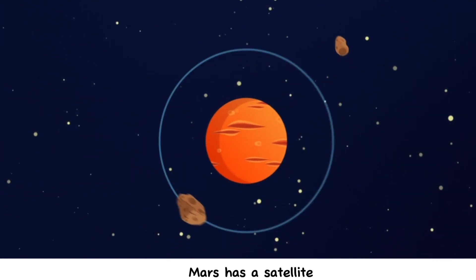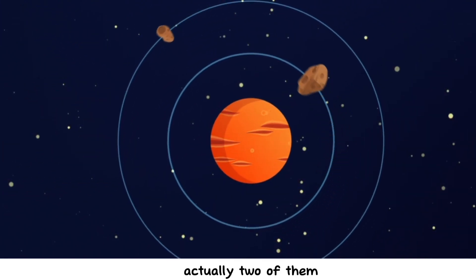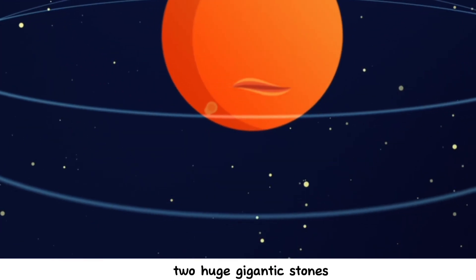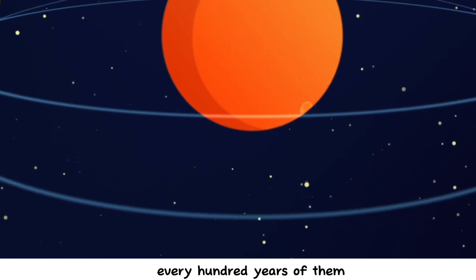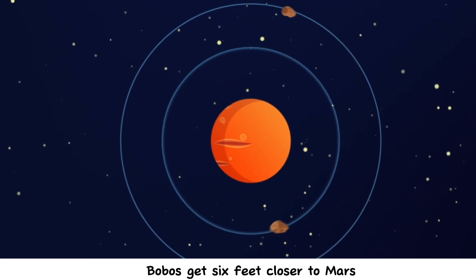Just like the Earth, Mars has a satellite, actually two of them. Two huge gigantic stones. Every hundred years, Phobos gets six feet closer to Mars and will eventually fall on the planet.